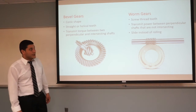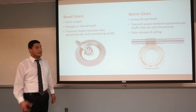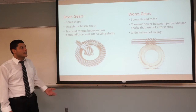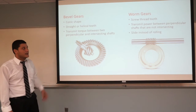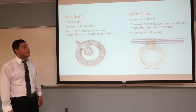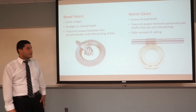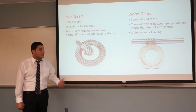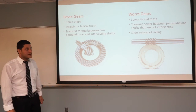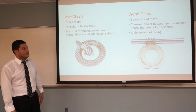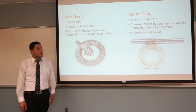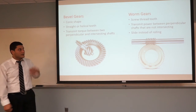Worm gears transmit power between perpendicular shafts that are not intersecting. The worm gear has only one tooth in the form of a screw thread, and instead of rolling like any other type of gear, they slide and create friction that affects the efficiency of the entire system. So this type has a very low efficiency compared to the others.